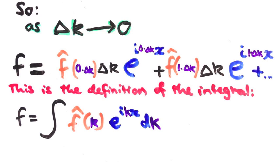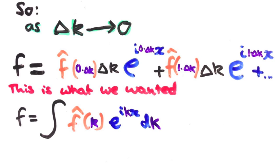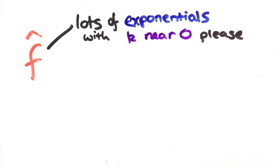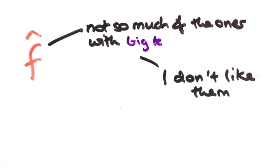This if you remember is the integral we were trying to explain. So you can see that the Fourier transform function tells us which of the exponential functions to give the most and least weight to when we approximate a function using the exponentials.